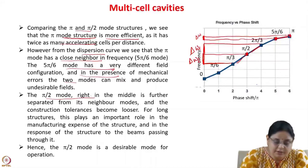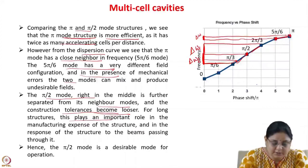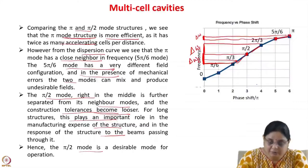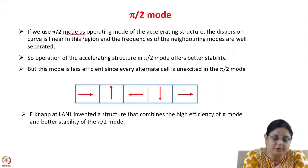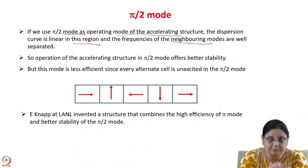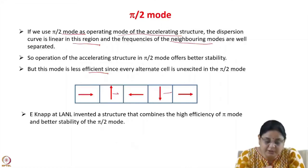The π/2 mode, right in the middle of the dispersion curve, is further separated from its neighbor modes, so construction tolerances become looser. Even if these frequencies come close, there is still scope because they are well separated from this mode. For long structures, this plays an important role in manufacturing expense and in the response of the structure to beams passing through it. So the π/2 mode is desirable for its stability, however it is inefficient compared to the π mode structure.